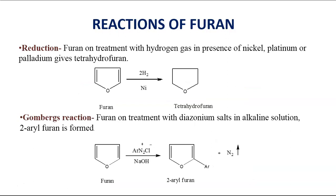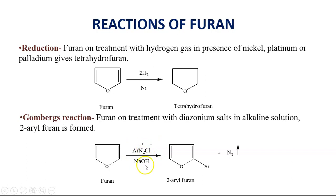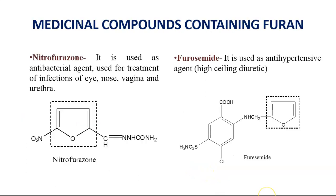The next set of reactions is reduction reactions. Furan on reduction — on treatment with hydrogen gas in presence of nickel, platinum, or palladium — gives tetrahydrofuran. Furan also undergoes Gomberg's reaction: furan on treatment with a diazonium salt in alkaline solution gives 2-arylfuran.